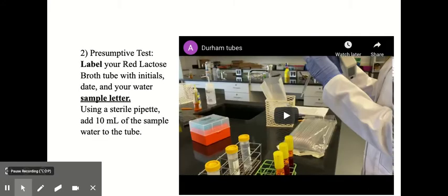But this next test, the presumptive test, is actually testing for coliform bacteria. So for the presumptive test, you would label those red lactose broth tubes with your initials, the date, and the water sample letter.